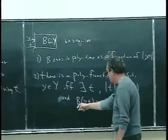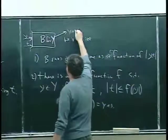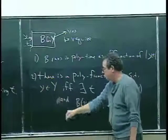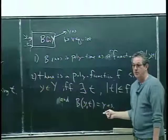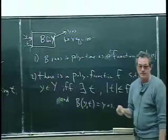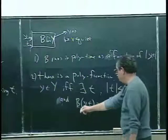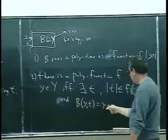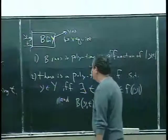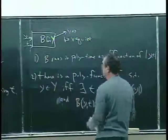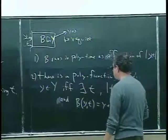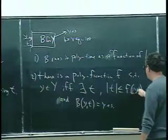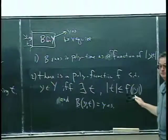B(y, t) is the output of this algorithm B. The algorithm B can output yes, it can output no, and it can just spin its wheels and not output anything. This is saying that algorithm B, when given input y and string t, says yes. We know it does this in polynomial time — that's what the first condition says.